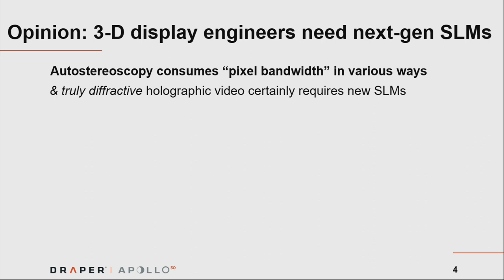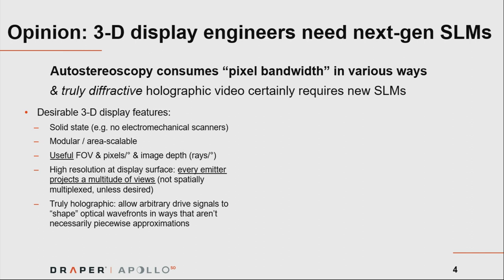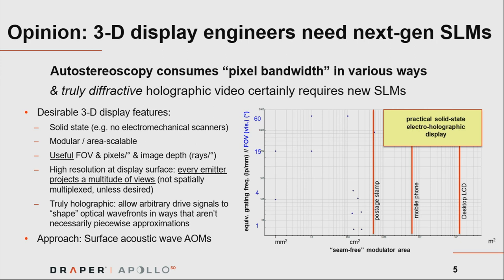In my opinion, and evidently the opinion of the previous speaker too, we 3D display engineers really need next-generation spatial light modulators. Auto-stereoscopic displays consume pixel bandwidth in a variety of ways, and if you want truly diffractive holographic video — not snake oil where everything is called a hologram — we certainly need new SLMs. A good 3D display should be solid state, lacking mechanical scanners, modular, with a useful field of view of 30 to 45 degrees, many rays per degree with very low divergence, and high resolution at the display surface so every emitter projects a multitude of views rather than relying on lenticulars.